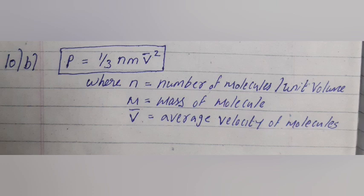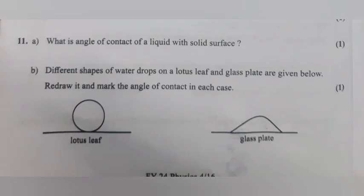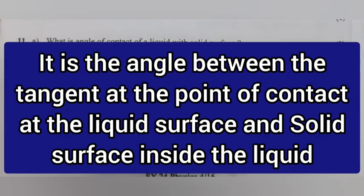Question 11a: What is angle of contact of a liquid with solid surface? Answer: It is the angle between the tangent at the point of contact at the liquid surface and the solid surface inside the liquid.